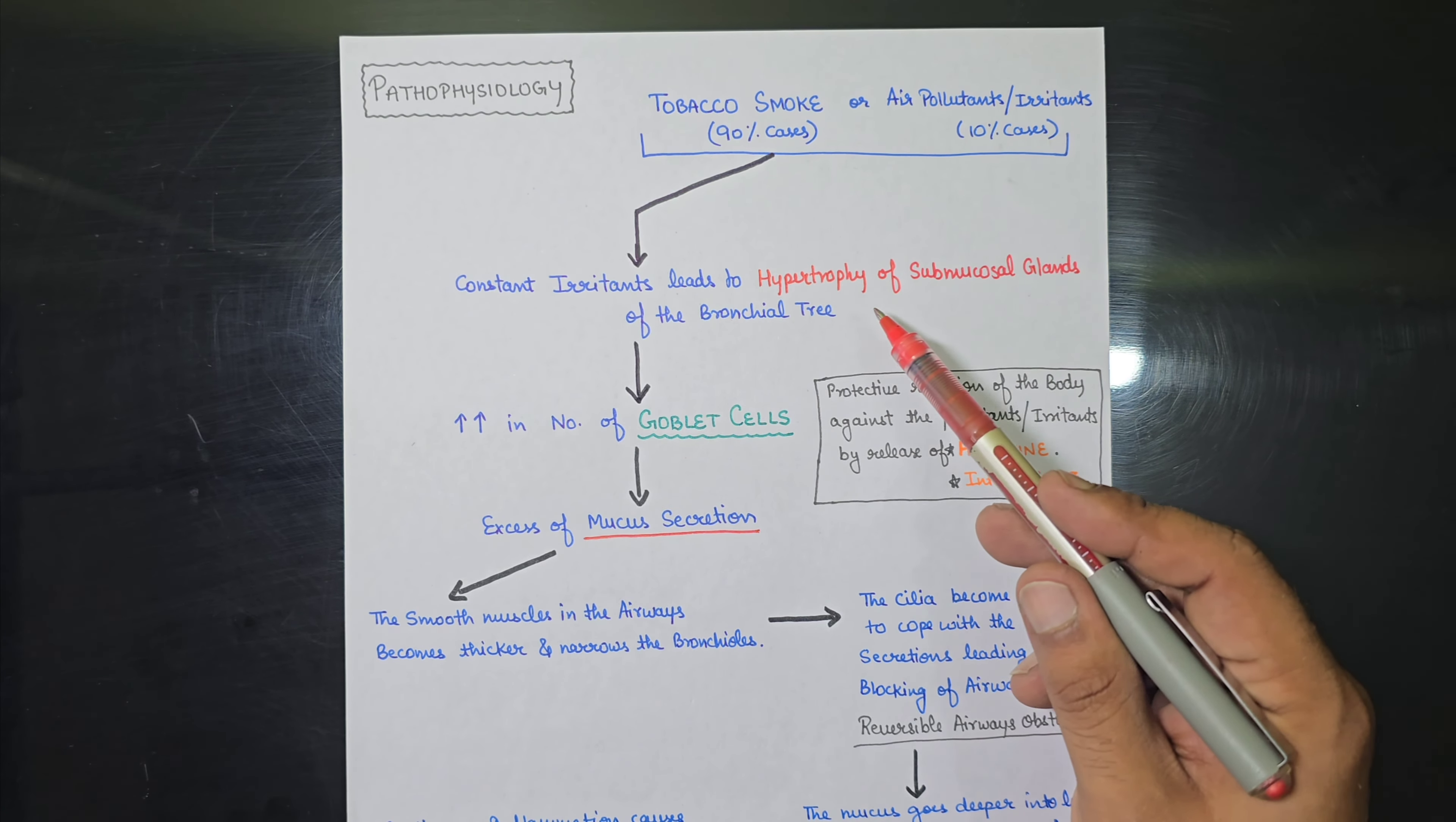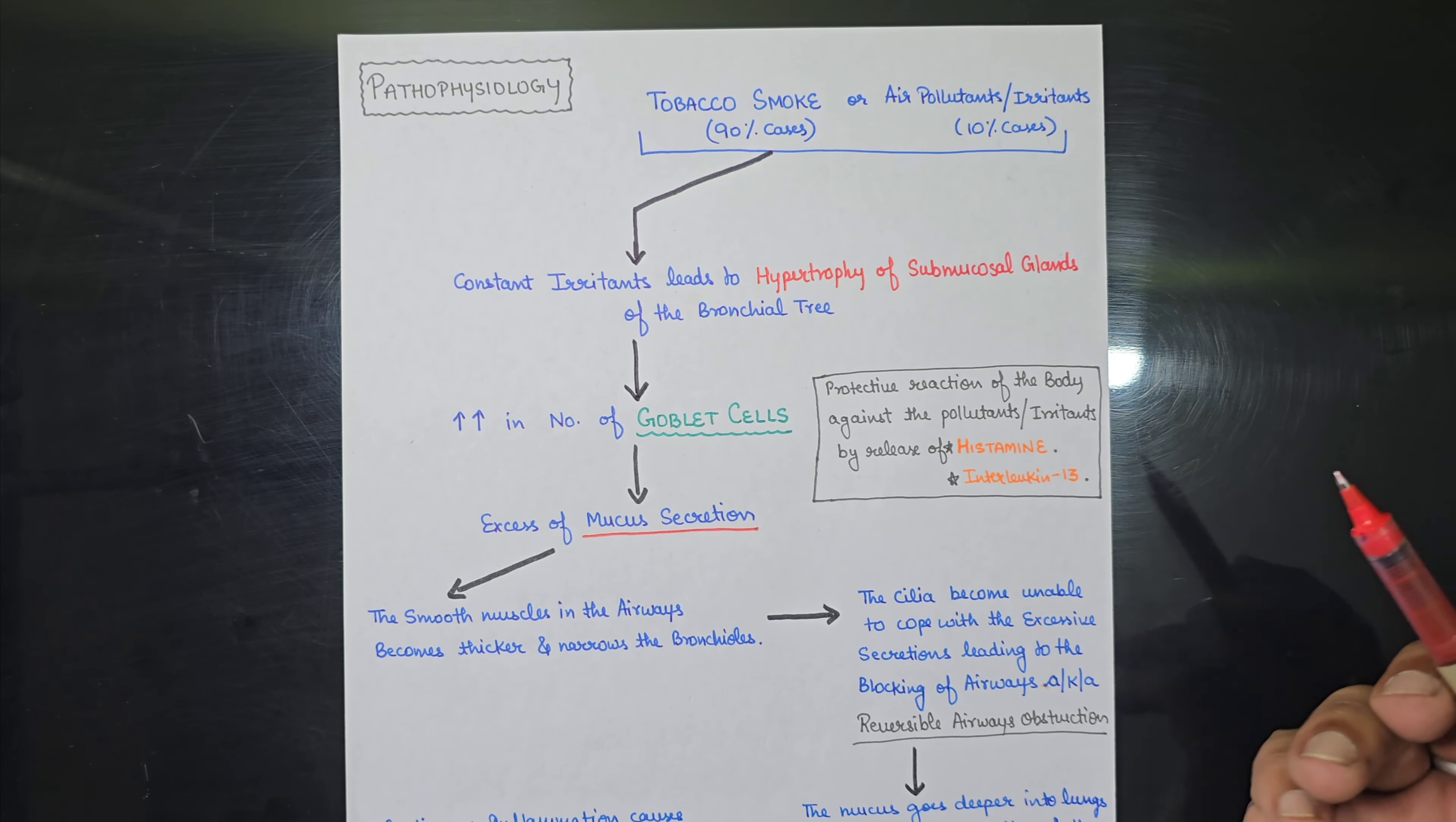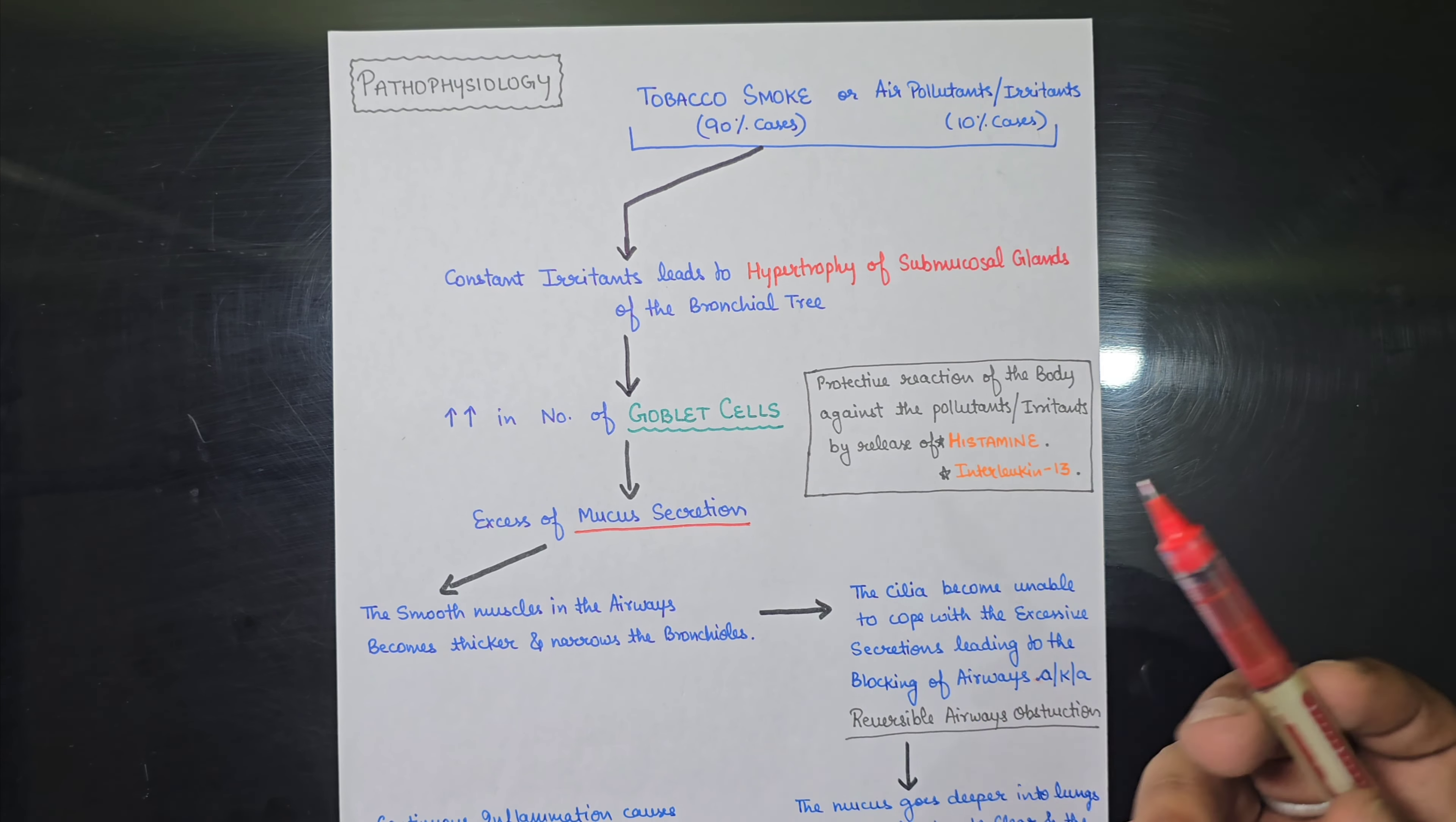So what will happen if there is hypertrophy of the submucosal gland? It will lead to the increase in the number of goblet cells. And basically goblet cells are the protective reaction of the body against the pollutants and irritants, and they will release histamine and interleukin-13. But due to all these changes, there is excess mucus secretion, excess mucus will be formed.